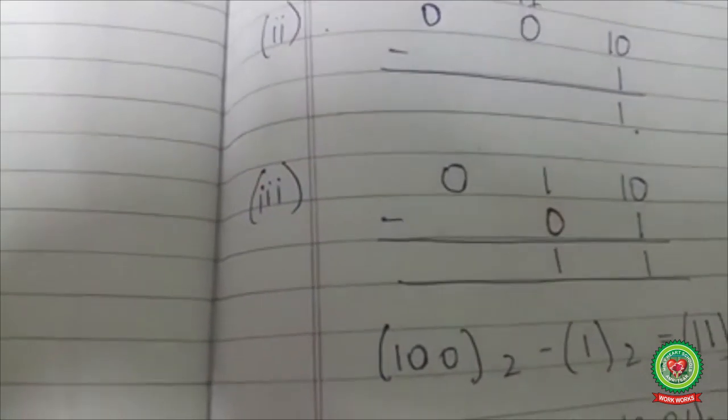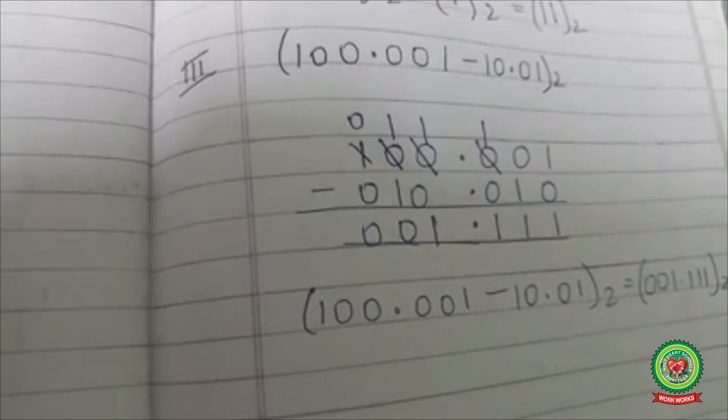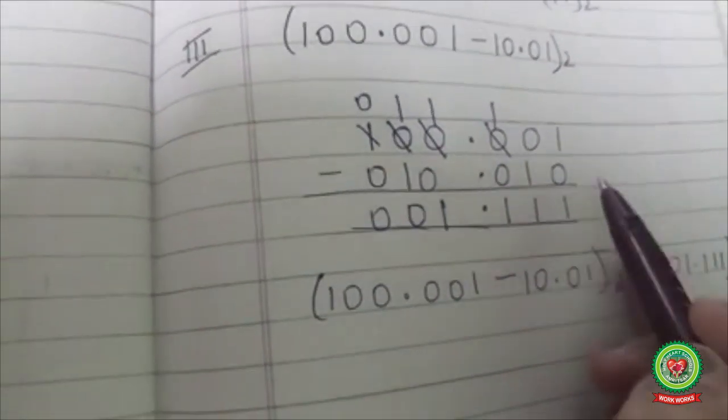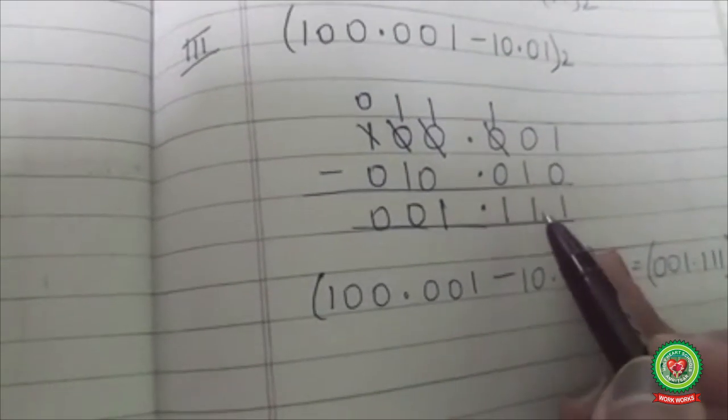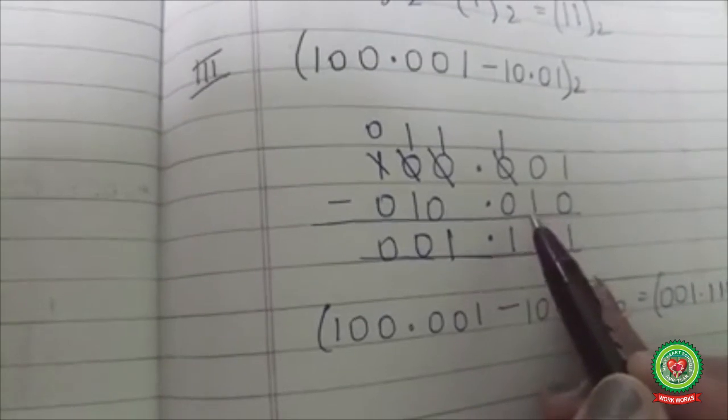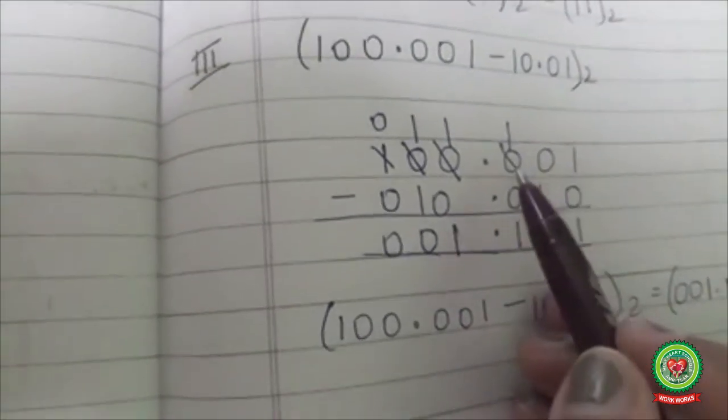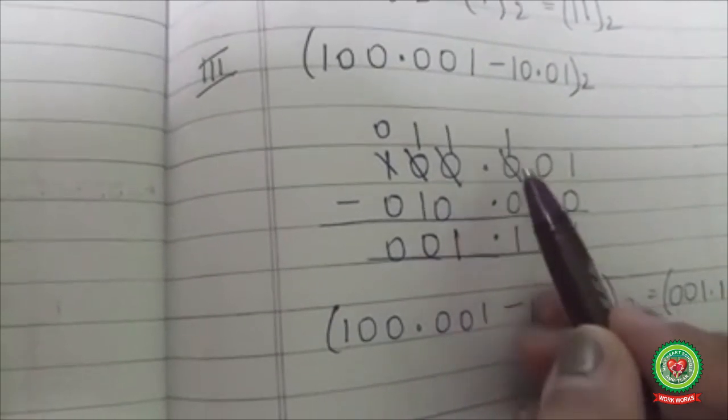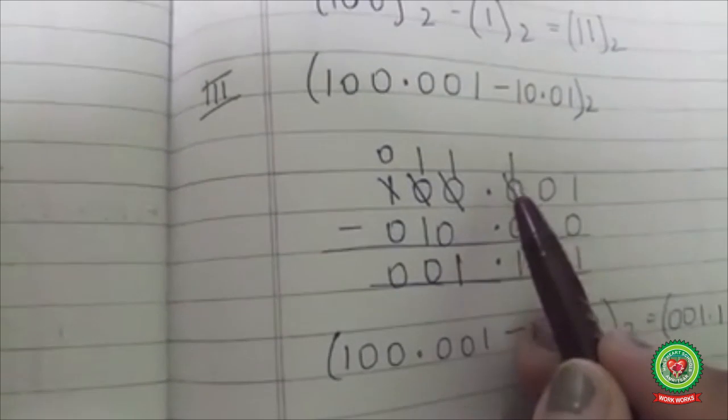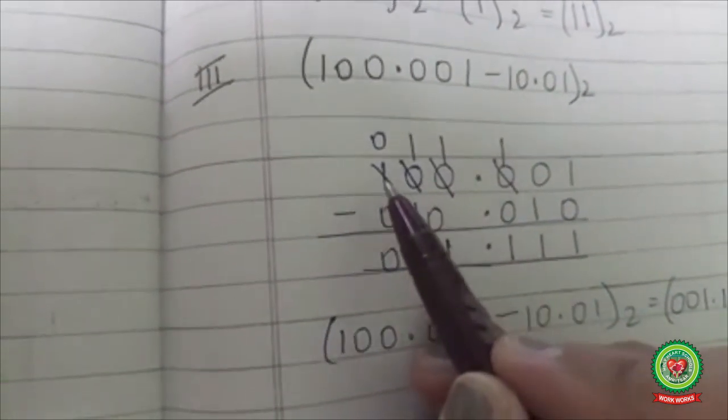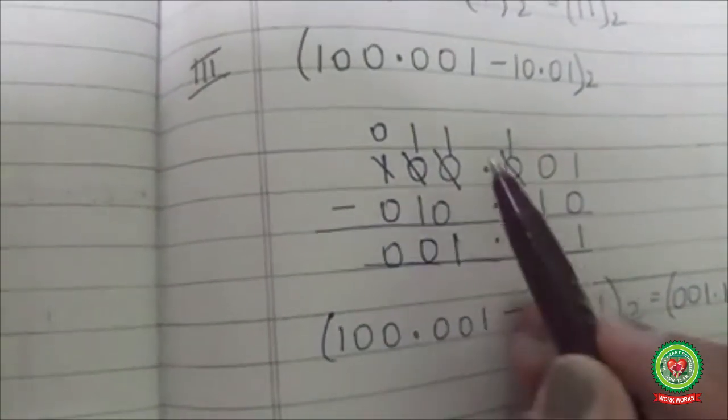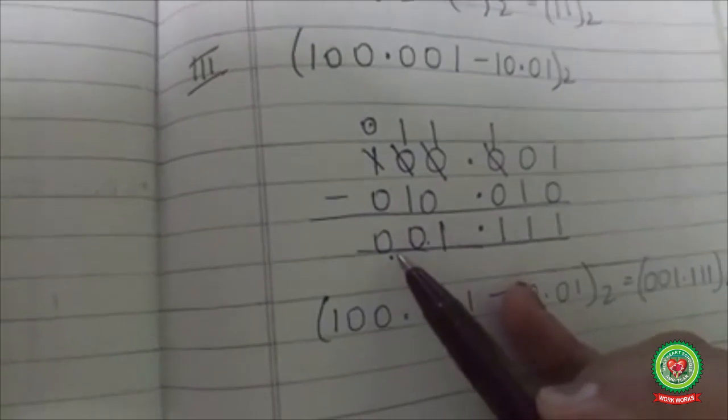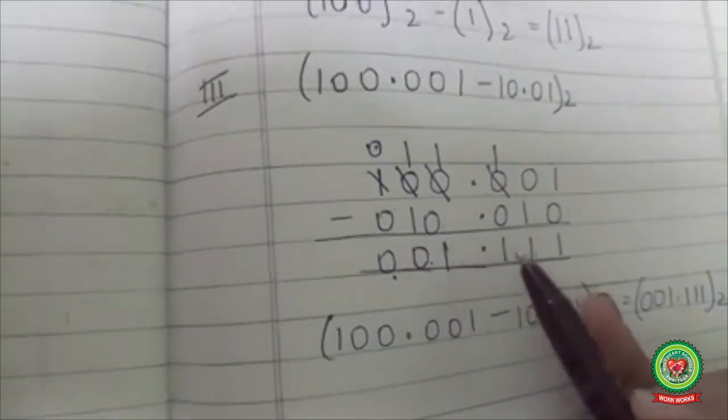Let's do fractional subtraction on binary numbers with the help of the rules. So 1 minus 0 is 1, 1 minus 0 is 1, 1 minus 1 is 0, and 0 minus 0 is 0. So the answer is 001.111.